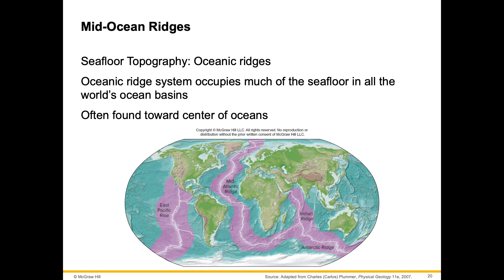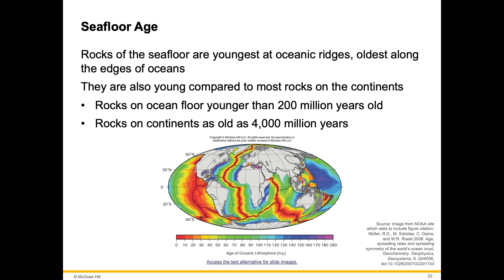The Mariana Trench is in the Pacific Ocean, and also the Ring of Fire — keep that phrase in mind as we go into other topics. The age of the ocean floor: how old is it? The age of the seafloor rocks varies systematically. The rocks of the seafloor are very young compared to most rocks on the continents — rocks on the ocean floor are younger than 200 million years old, while rocks on the continent are as old as 4,000 million years old. That's quite a difference.